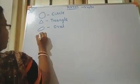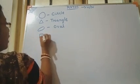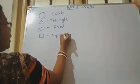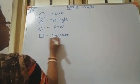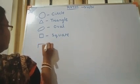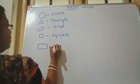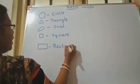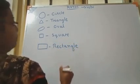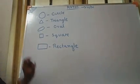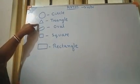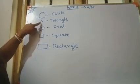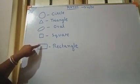Then square: S-Q-U-A-R-E. Then rectangle: R-E-C-T-A-N-G-L-E. Rectangle. So: circle, triangle, oval, square, rectangle. Circle, triangle, oval, square, rectangle. Circle, triangle, oval, square, rectangle.